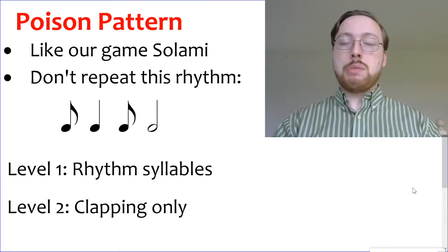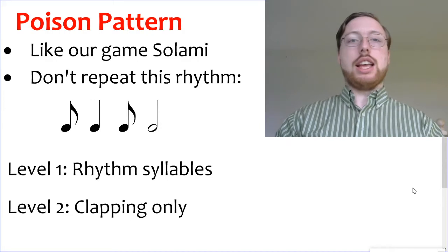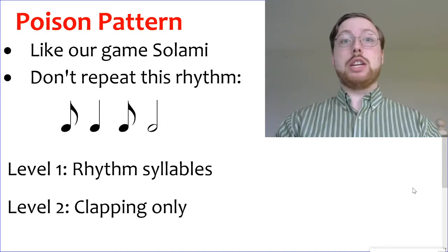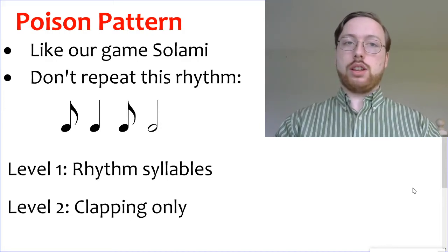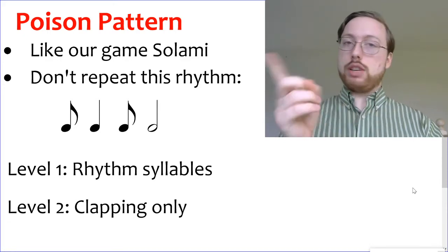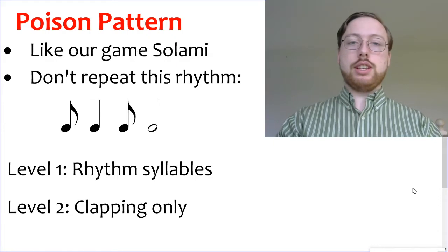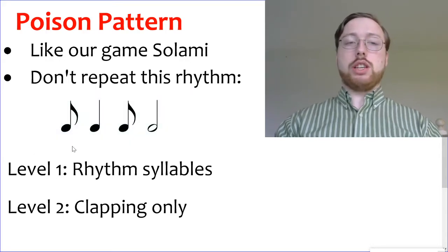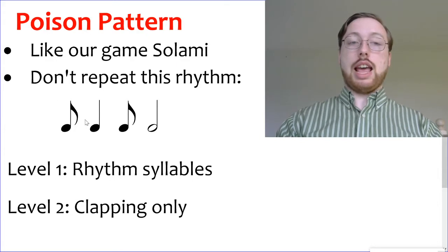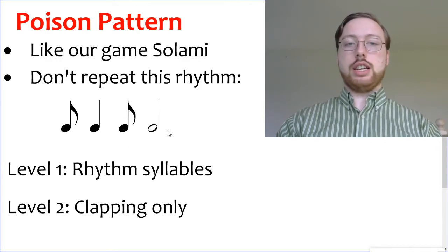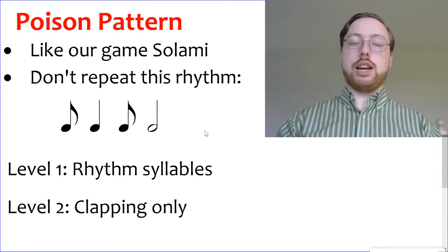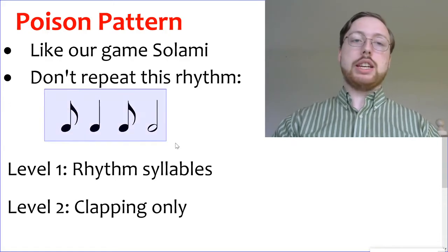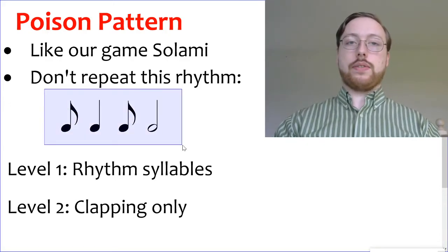We're going to play a game called Poison Pattern. This is basically like our game Salami, except we're going to use rhythms instead of pitches. On the board I have a pattern that you cannot repeat. If we say this pattern using our rhythm syllables, we know that this is half of a tt, so it must be just a t. This is our ta, this is the other half of the tt, so t. And this is our ta — remember ta has two beats. So this whole pattern would be tt, tt, tt, tt. Try that.